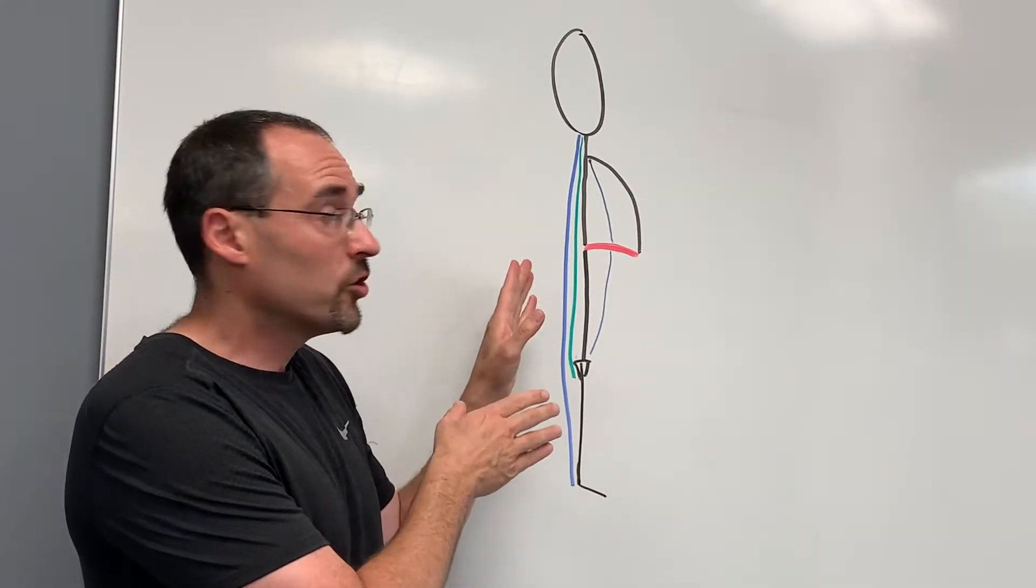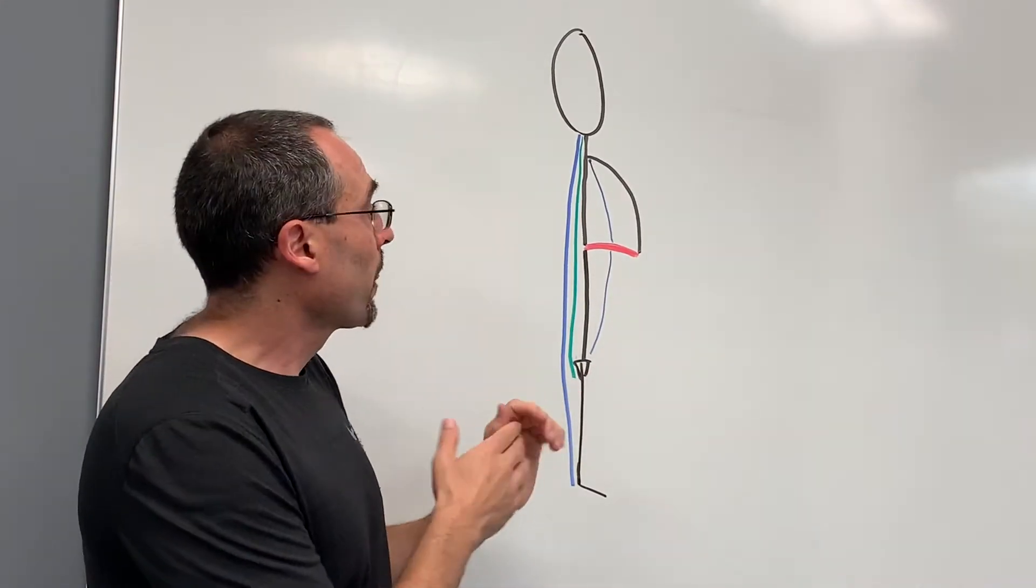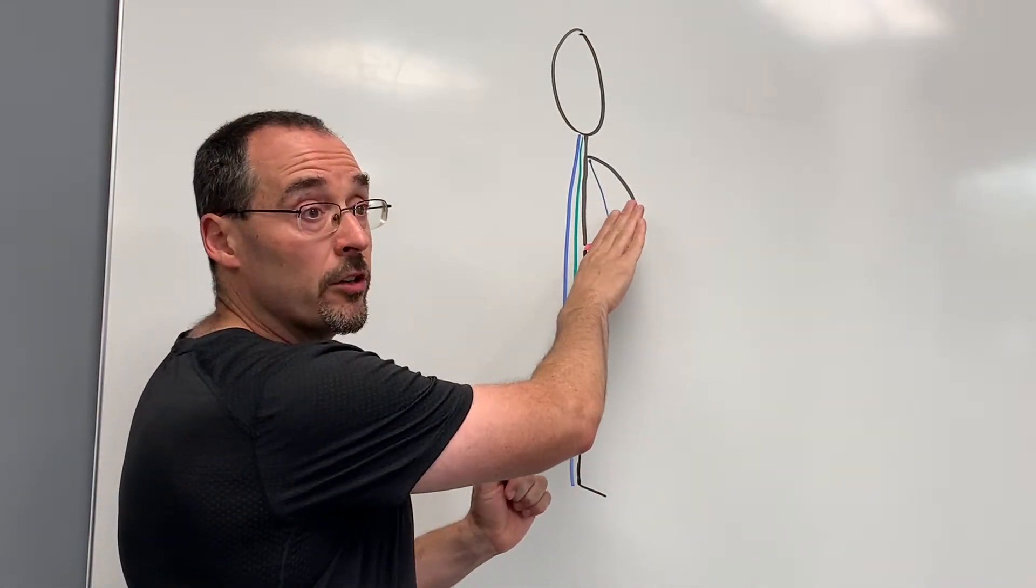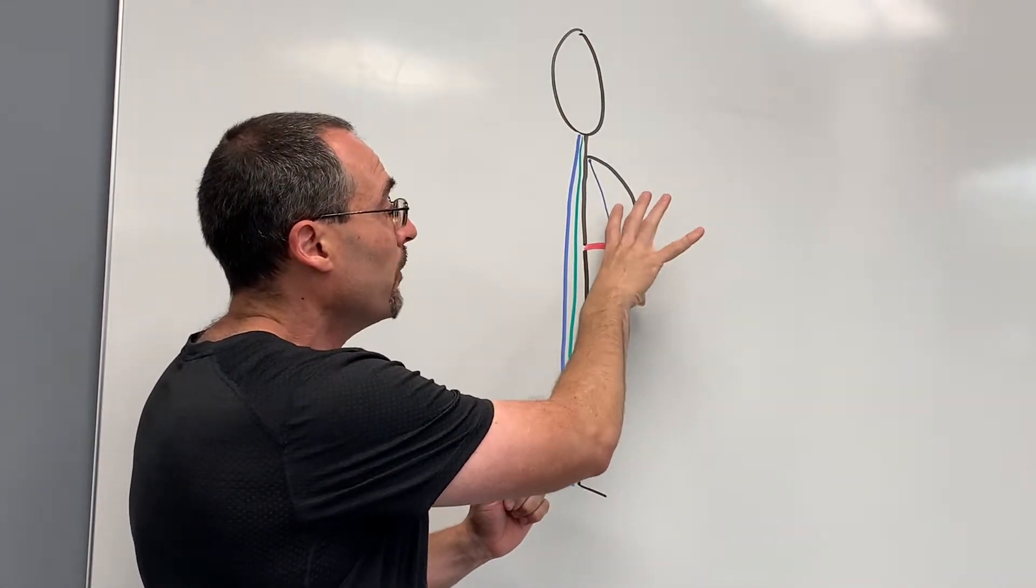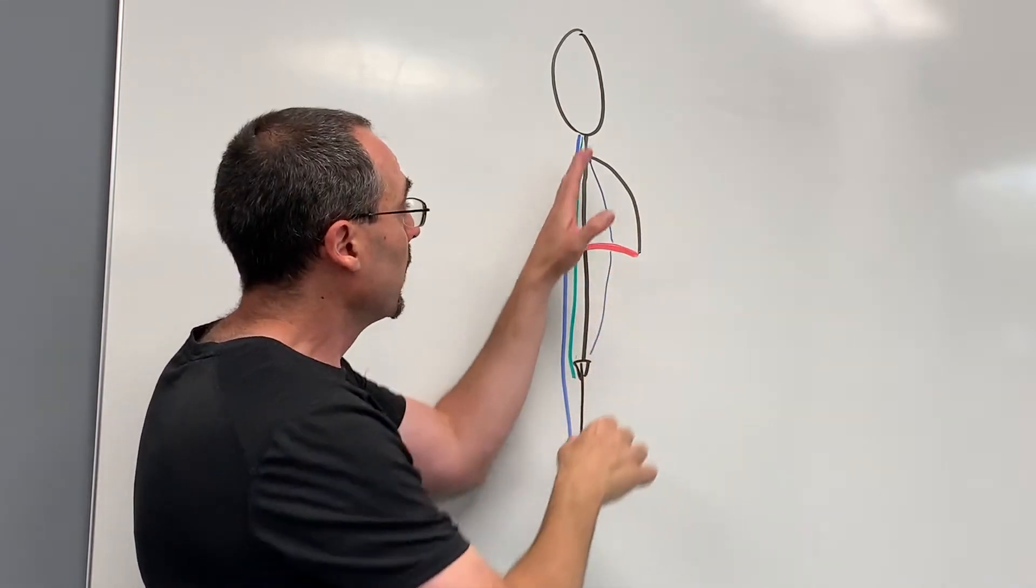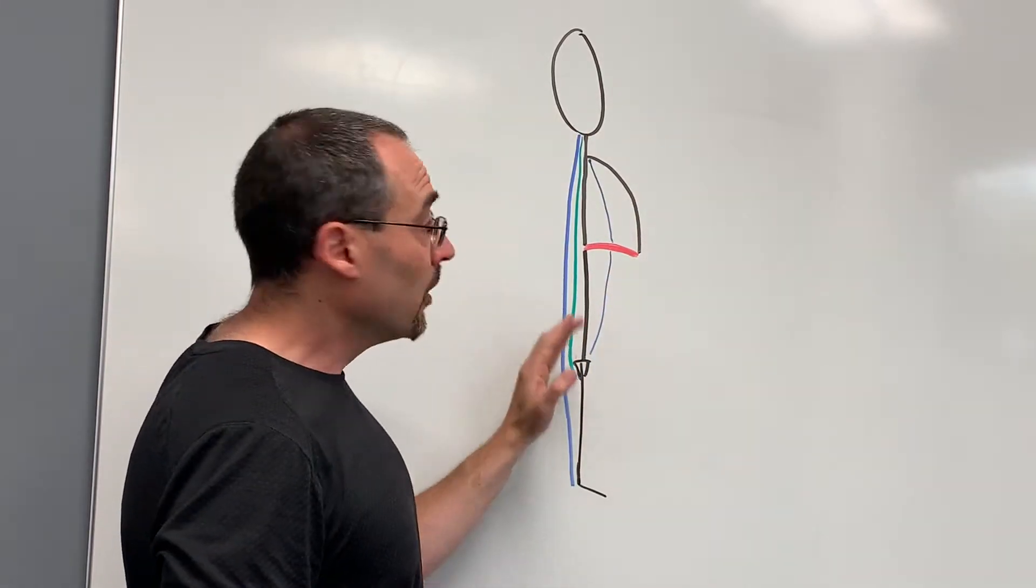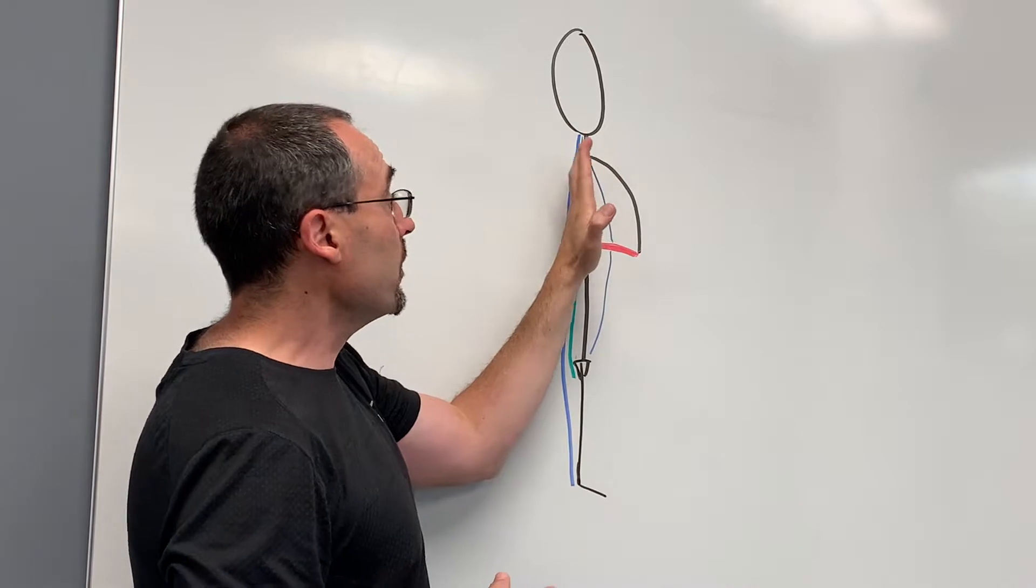So here's an illustration of the posterior chains from a side view. You have right here your anterior fascial band that the muscles collectively want to pull you forward, and then your posterior chain, which these muscles collectively want to pull you backwards.